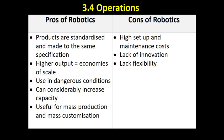Similar to capital intensive pros and cons, the products are standardised, made consistently to the same specification. We get higher output, which can lead to economies of scale. Robotics can be used in dangerous conditions — maybe high or low temperatures that humans wouldn't be able to safely access. Robotics can considerably increase your capacity; installing robotics means you can potentially produce a lot more goods through a mass production system, which can dramatically increase an organisation's capacity.